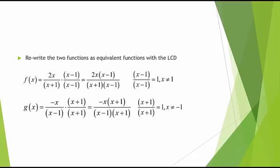Next we have to rewrite the two functions as equivalent functions with the LCD. f(x) equals 2x divided by x plus 1, times x minus 1 divided by x minus 1. This gives us 2x times x minus 1, divided by x plus 1 times x minus 1 in the denominator. We can do this since x minus 1 divided by x minus 1 equals 1 for all values except when x equals 1.